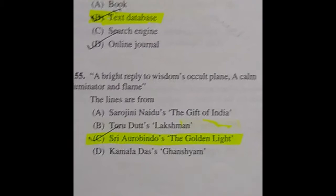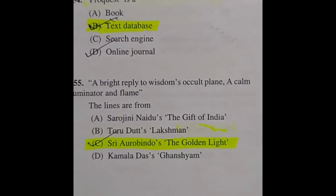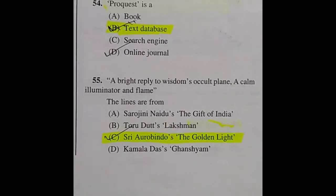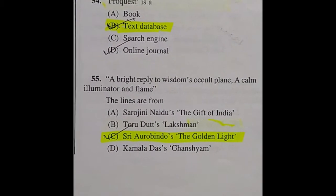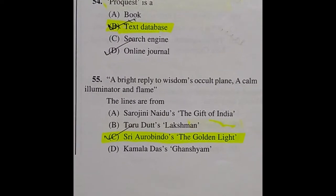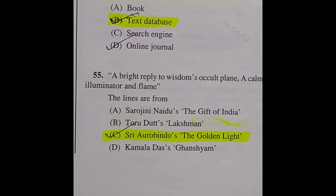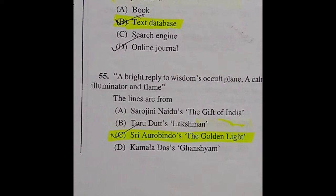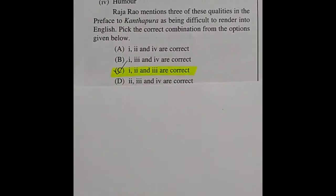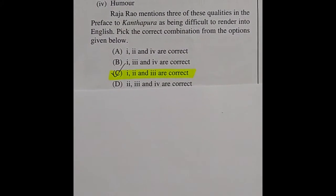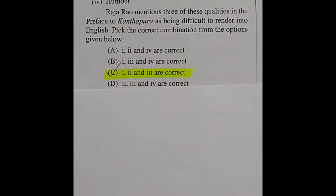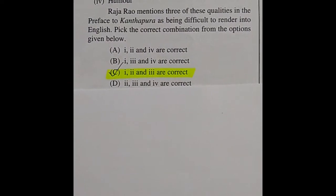Question 55: 'A bride reply to the two wisdoms, occult plan, a calm illuminator and flame' — the lines are from the right answer: Sri Aurobindo's The Golden Light.